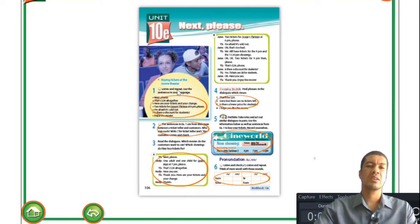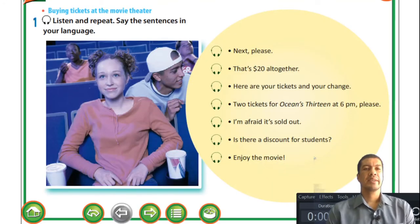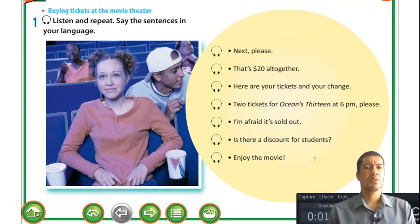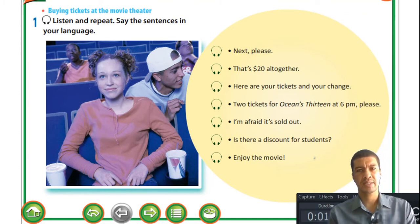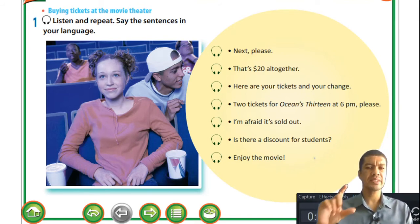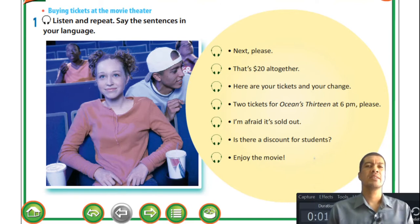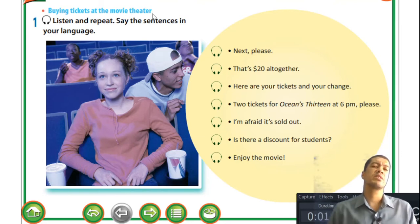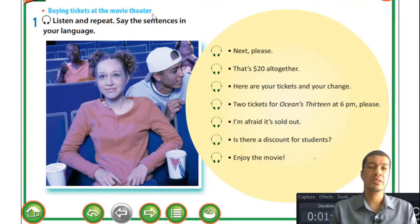Let's start our list: buying tickets at the movie theater. There are different ways to buy tickets nowadays. Most of you are familiar with the internet - you can book tickets online and just show your voucher or ticket at the counter. Today we're specifically focusing not on online purchases but on going to the movie theater physically to pay for your tickets.